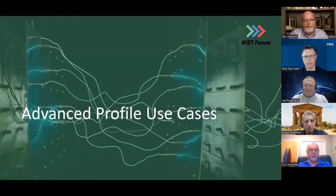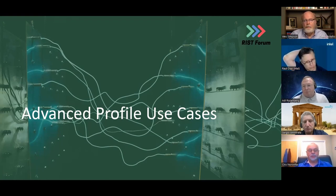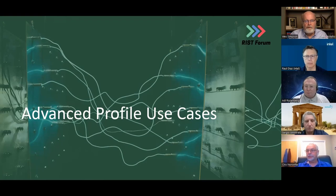We had a couple of questions come in. First: any interest in adding FEC to lower latency by removing the ARQ buffer? RIST was designed specifically with forward error correction in mind. If you're sending a SMPTE ST 2022-2 stream over RIST Simple Profile, RIST would support both sending the payload packets as well as the FEC packets. That was in there from the get-go.